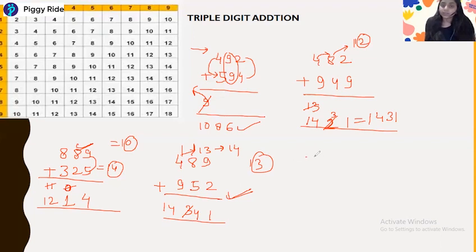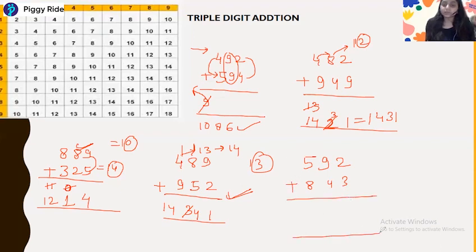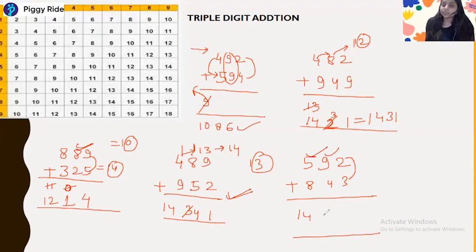Next example: 592 plus 843. Here, 5 plus 8 is 13 (carry), increased by 1 gives 14. Then 9 plus 4 is 13 — end number is 3. Then 2 plus 3 is 5 — a non-carry number — so the 3 does not increase because the next digit is non-carry. The answer is 1435.